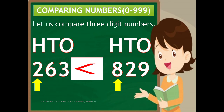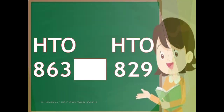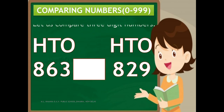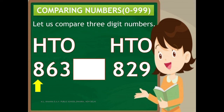Now let us change 263 to 863 and compare 863 and 829. Start by comparing the hundreds place — both digits are the same. So we move to the tens place. Here, 6 tens are greater than 2 tens. That means 863 is greater than 829.